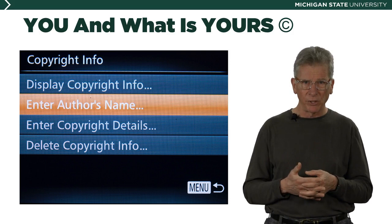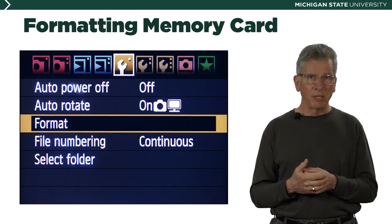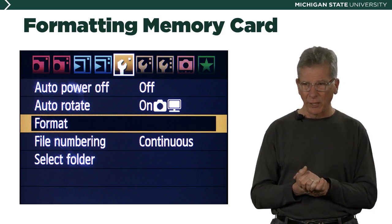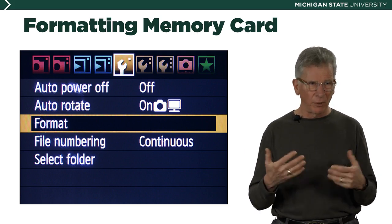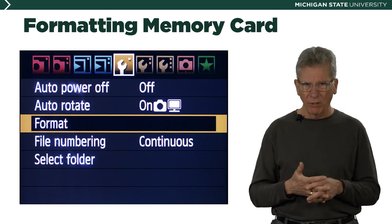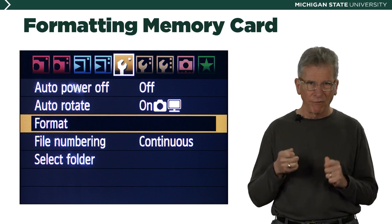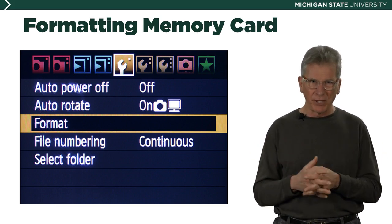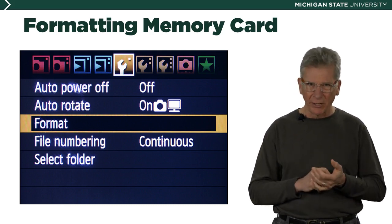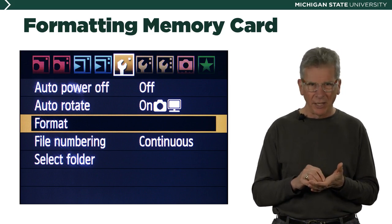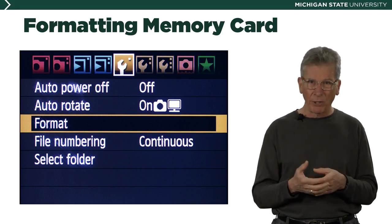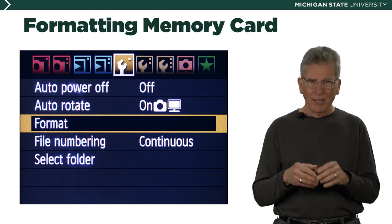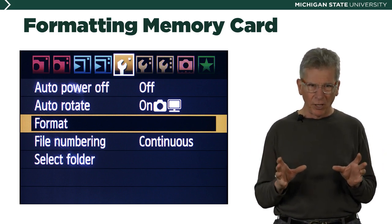Now, formatting the memory card — this is something we're going to do before we even go out and shoot any pictures. I've had students come in for a beginning photo class assignment, go out, and come back the next week saying they couldn't fit any more pictures on their memory card. I'll look at them and say, well, you didn't listen to the lesson on formatting. Some people just delete pictures one at a time using the garbage can symbol on the back of the camera. I've even had students with a memory card with pictures going back years, who just delete one or two when they run out of space and then shoot a few more — that doesn't make any sense.